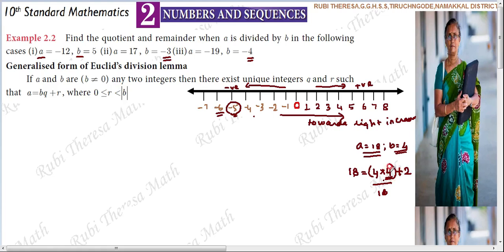Your remainder should be positive — greater than or equal to zero. And the remainder must be less than the modulus of B, that is less than |B|.